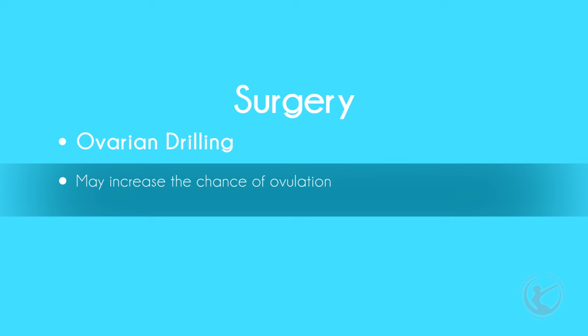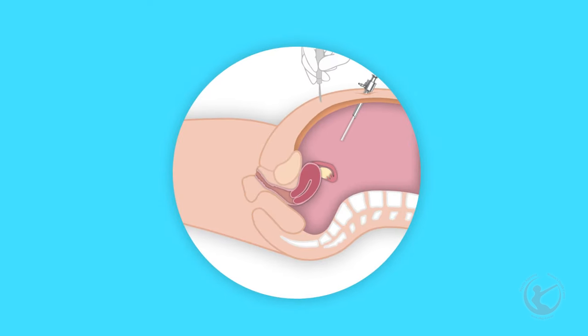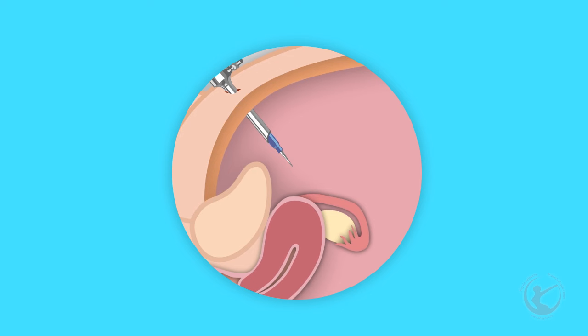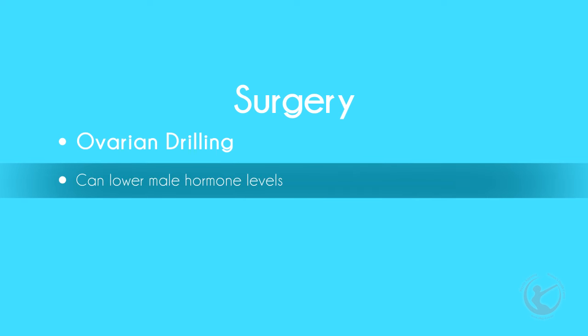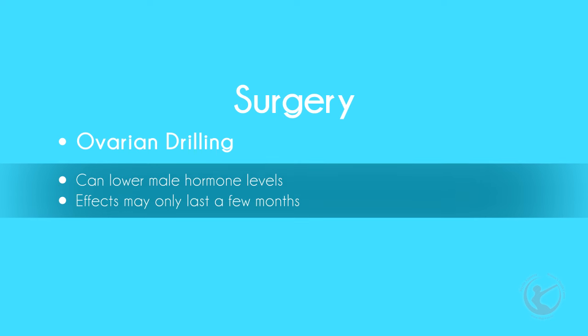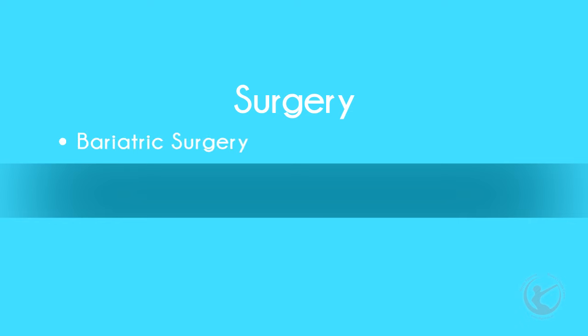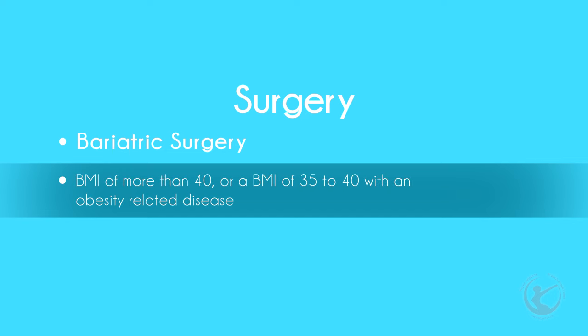Surgery: ovarian drilling is a surgery that may increase the chance of ovulation. It is sometimes used when a woman does not respond to fertility medications, or has recurrent miscarriages with very high LH levels. It is done via laparoscopy. I puncture the ovary with a small needle called a coarse needle, which carries an electric current and destroys a small portion of the ovary. This procedure carries the risk of developing scar tissue on the ovary. It can lower male hormone levels and help with ovulation, but these effects may only last a few months. Other options include bariatric surgery for weight loss, which is indicated if you have a BMI of more than 40, or a BMI of between 35 and 40 with an obesity-related disease.